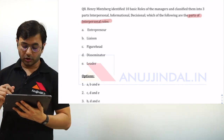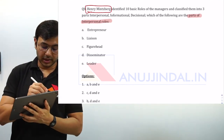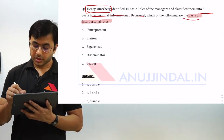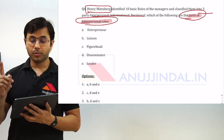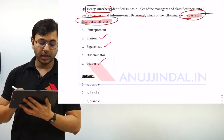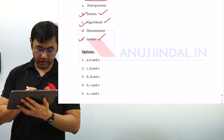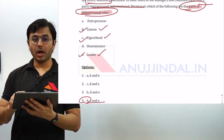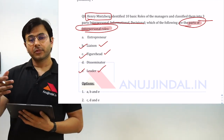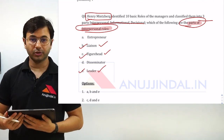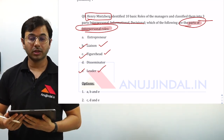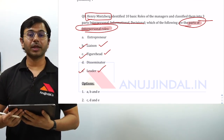Henry Mintzberg identified 10 basic roles of managers, classified into three: interpersonal, informational, and decisional — with three sub-roles each. Which of the following are parts of interpersonal roles? Interpersonal included figurehead, leader, and liaison — so the answer is B, C, and E which is option 4. In the next class we will talk about organization structure and then move forward to complete the entire organization theory. If you liked the lesson, subscribe to the channel and press the bell icon. All the very best — take care for the exam.